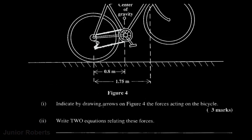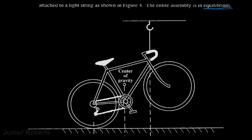The question says to indicate by drawing arrows on the figure the forces acting on the bicycle. The bicycle is resting on the ground, so at the point of contact there is a reaction force — the force produced by the ground on the bicycle wheel — acting upward. We call that R, the reaction force.